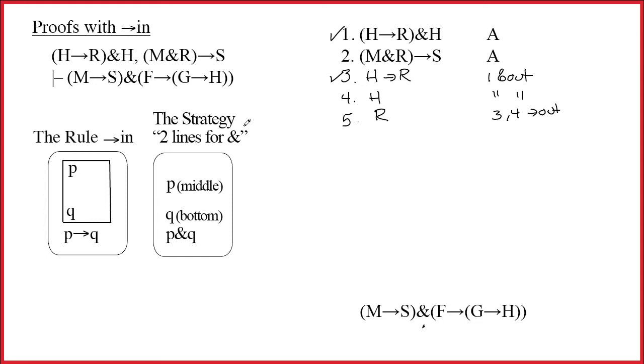Since it's an ampersand, we will not be doing arrow in, and we will not be drawing a big box up above this. Instead, we're going to use this strategy that I call two lines for ampersand. This strategy is not a rule. It's a strategy.